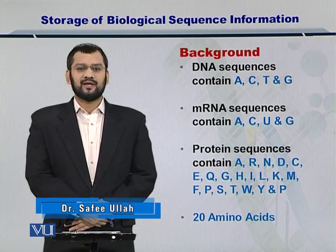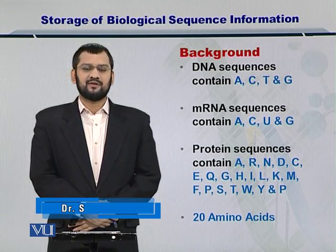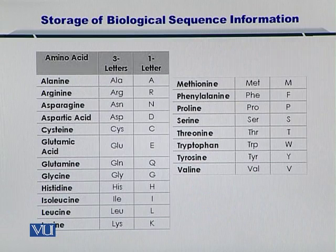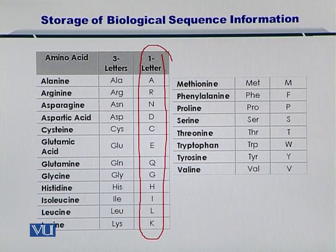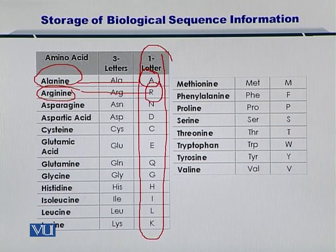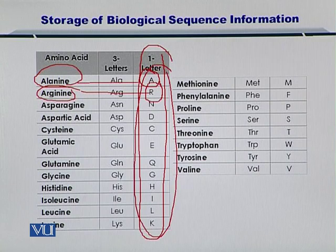For the proteins, you can have 20 different amino acids which are listed here for you. These amino acids can be represented by their one-letter symbol. For instance, alanine has A to represent it, arginine has R. So a protein can be simply narrated by combinations of these alphabets.